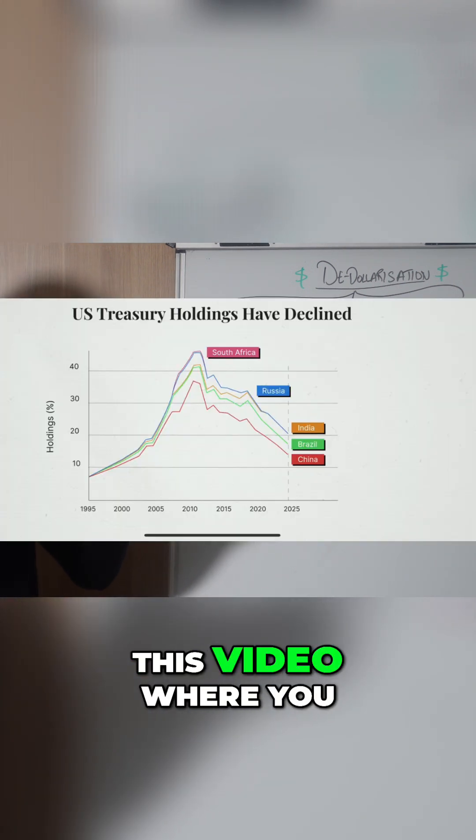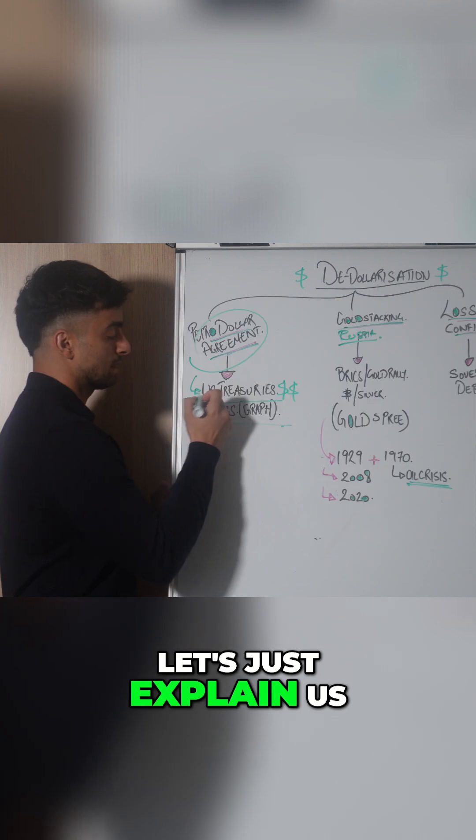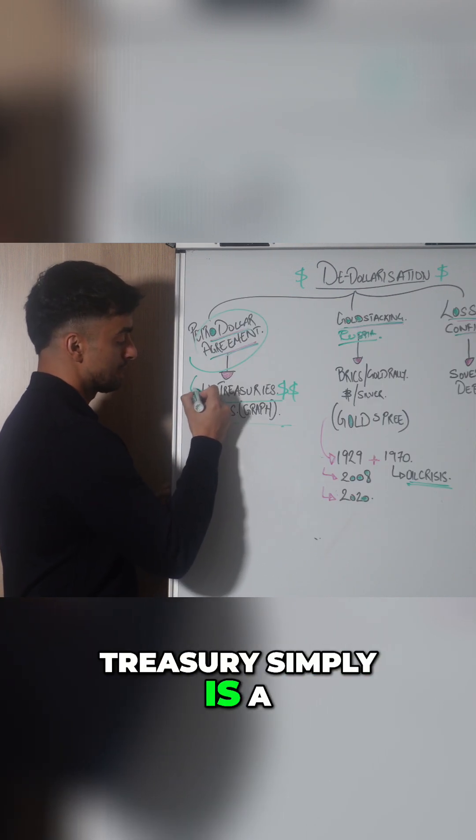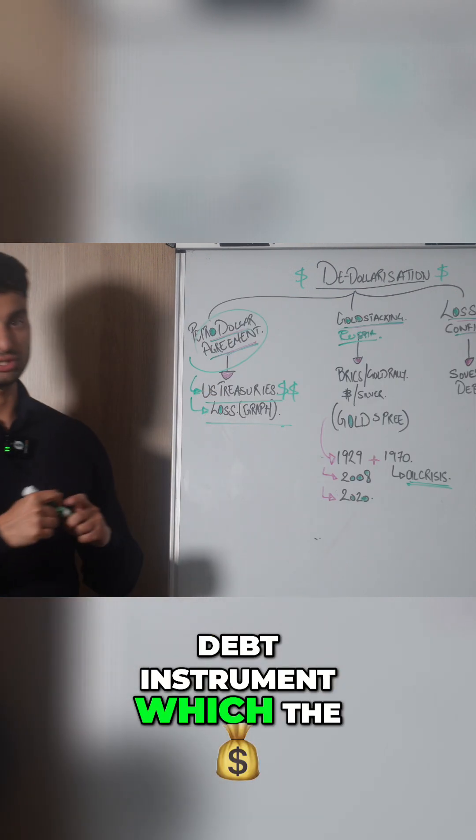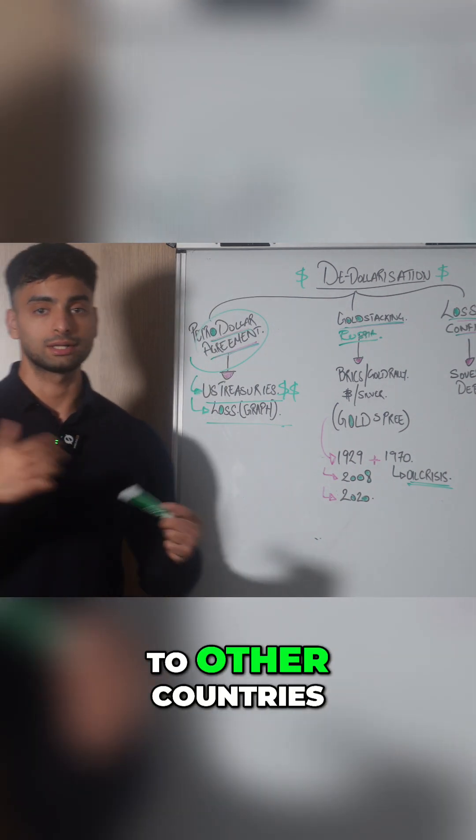I will be putting a graph into this video where you can see the U.S. treasuries. Firstly, let's explain: U.S. treasury is simply a debt instrument which the U.S. government issues, which the feds issue to other countries.